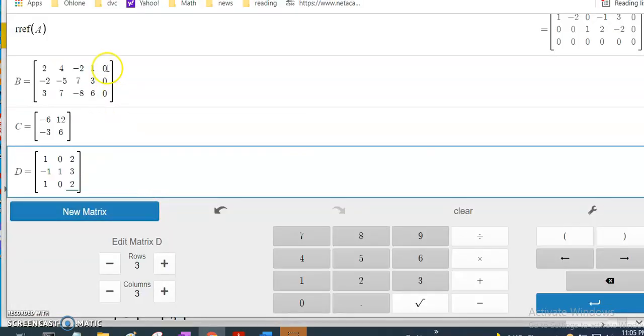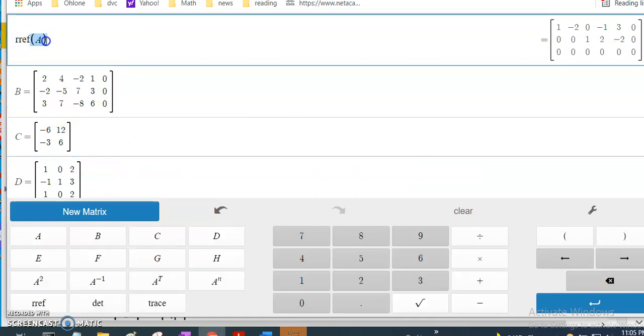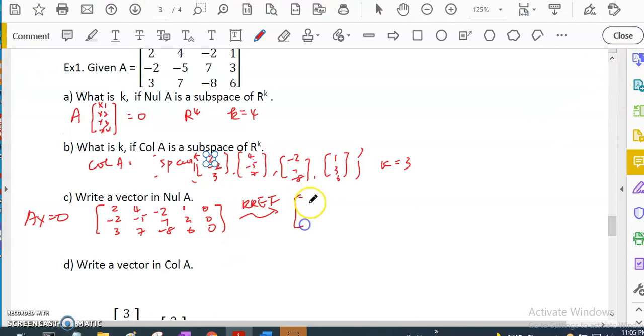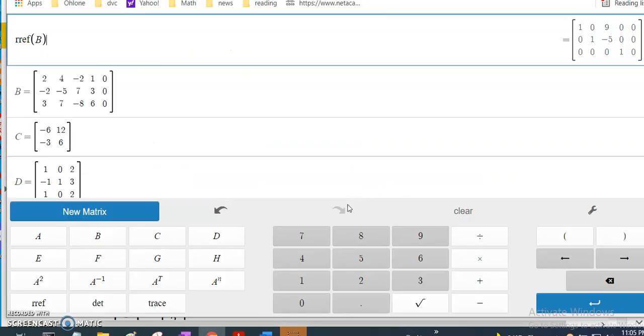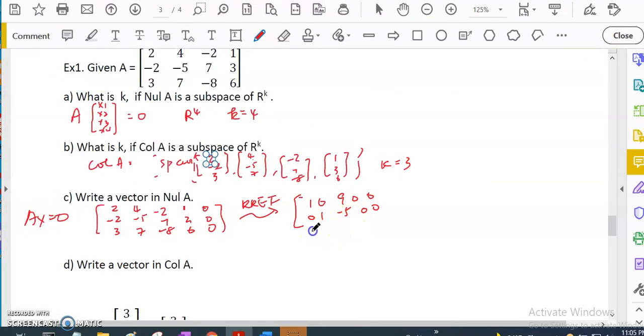I have the matrix and I do RREF of B. I get [1, 0, 9, 0, 0; 0, 1, -5, 0, 0; 0, 0, 0, 1, 0]. So I have 3 pivot columns, and x3 is free. So all of x1, x2, x3, x4 would be: x1 equals 9x3, x2 equals negative 5x3, x3 is free, and x4 equals 0.